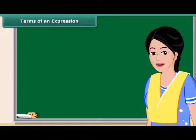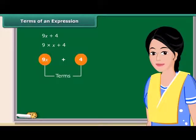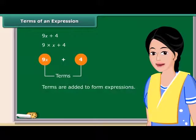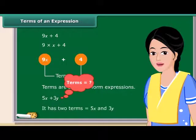Now we will discuss what terms of an expression and their factors are. Consider the expression 9x plus 4. In forming this expression, we first formed 9x separately as a product of 9 and x, and then added 4 to it. So you have seen these expressions have parts which are formed separately and then added. We call these parts as terms. That means terms are added to form expressions. How many terms are there in 5x plus 3y? That's right! It has two terms.